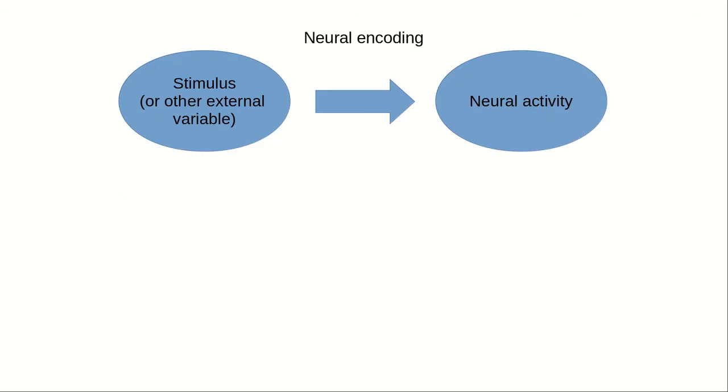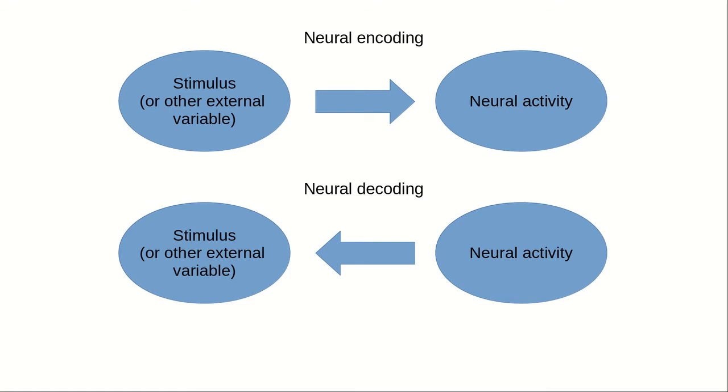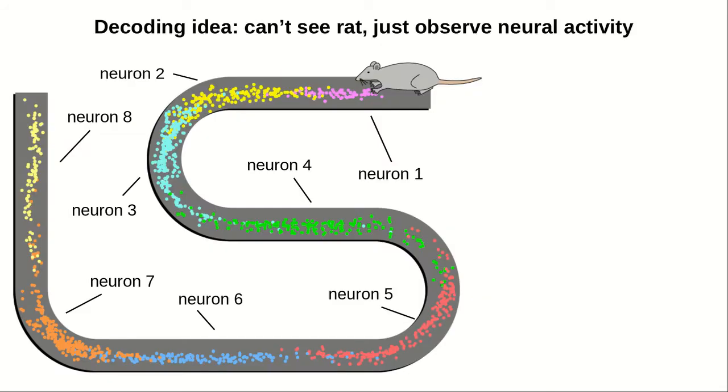If encoding is how an external variable is represented by neural activity, the idea of decoding is to go in the opposite direction. We observe neural activity and try to infer information about the stimulus, location, or other external variable. Let's go back to the rat running along the track. Imagine that you cannot see the rat but can only observe the spiking activity from the eight measured neurons. Your goal is to determine where the rat is.